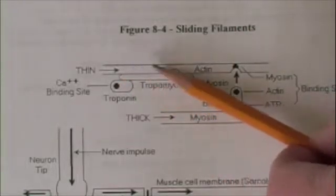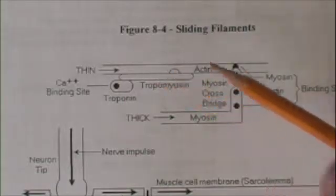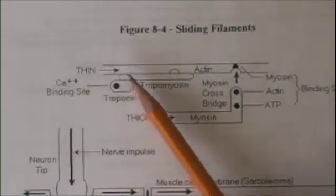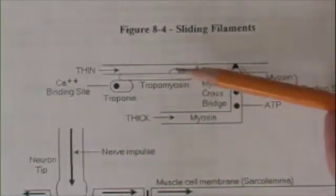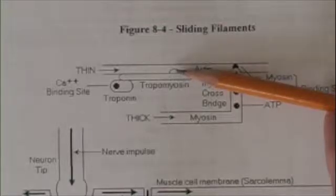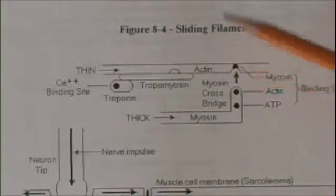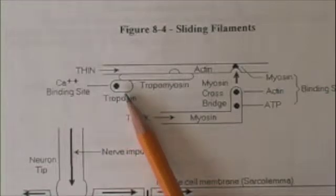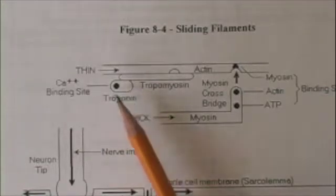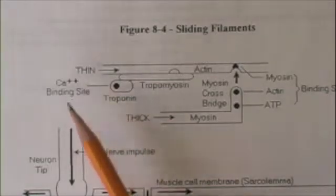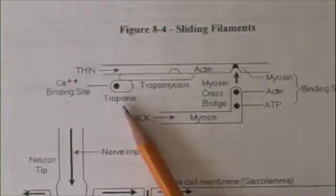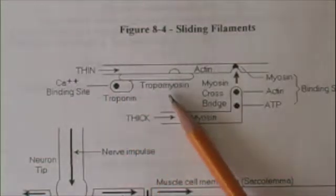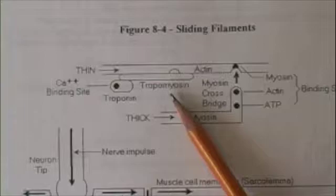Here's the thin filament with the myosin binding sites. Here is a tropomyosin molecule. Notice it covers up this myosin binding site on the actin molecule. And here is a troponin molecule with its calcium binding site. Now think of troponin as a hinge and tropomyosin as a cover.